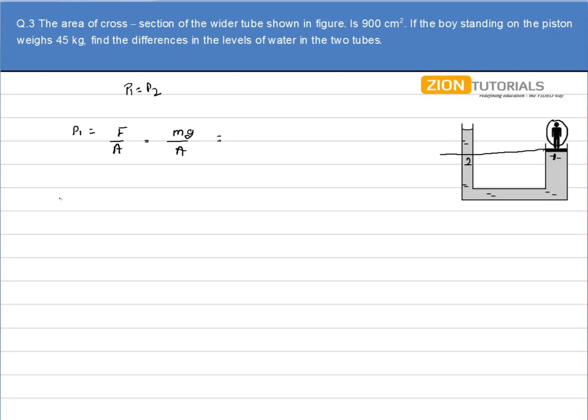I can write the value of P2 as P0, that is the atmospheric pressure, plus ρgh. This is the height I have to calculate, that is the difference in the level of water.